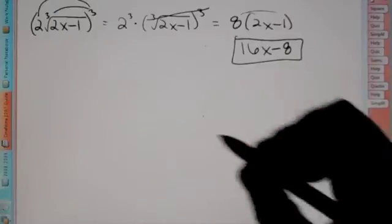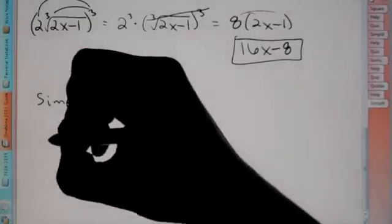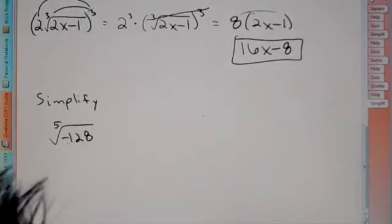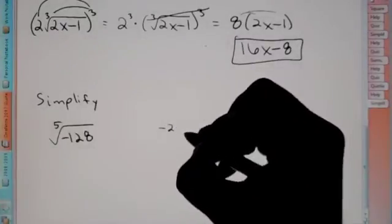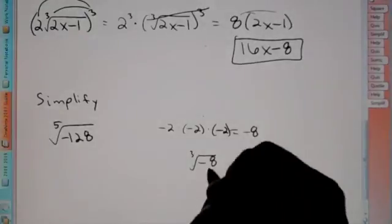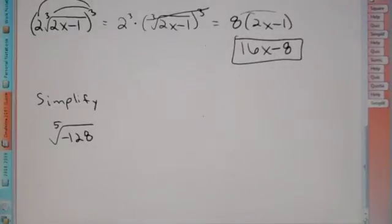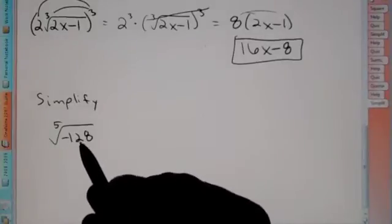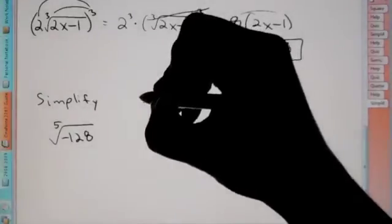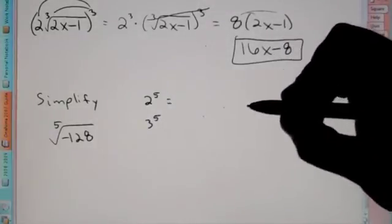Now it gets a little tougher — we have to simplify. Our first problem is the 5th root of negative 128. When you have an odd index, you're allowed to have a negative underneath, because negative 2 times negative 2 times negative 2 equals negative 8. So I can say the 3rd root of negative 8 is negative 2. We have to find the 5th root of negative 128, so we need to find a factor of 128 that is a perfect 5th power. 2 to the 5th is 2, 4, 8, 16, 32.